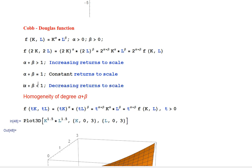The sum alpha plus beta cannot be less than zero because we assumed from the beginning that each of alpha and beta is positive. In a moment I want to show you the geometry of those cases — the different behavior of the production function when we have increasing, constant, or decreasing returns to scale.